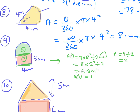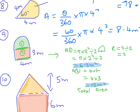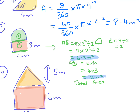Area 2 is just a rectangle, so it's base times height — 4 times 3 — which is 12 meters squared. The total area is area 1 plus area 2, so it's 6.3 plus 12, which equals 18.3 meters squared.